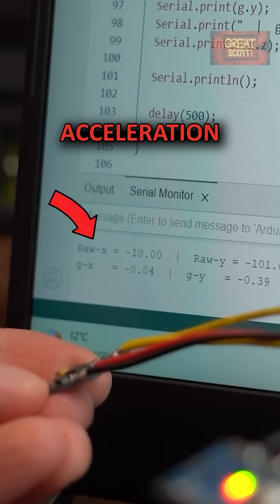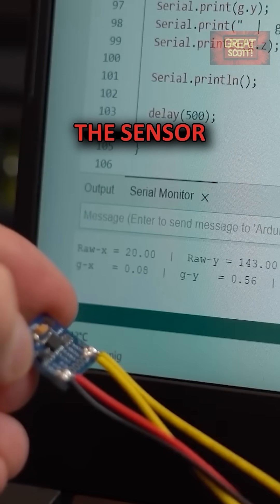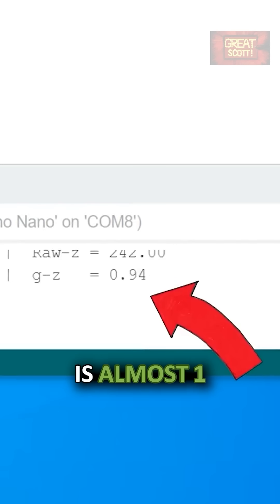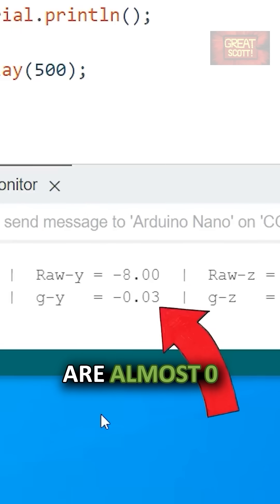The X, Y and Z acceleration does alter depending on how I hold the sensor. When I lay it flat on my workbench, the Z axis is almost 1 while the X and Y axes are almost 0.